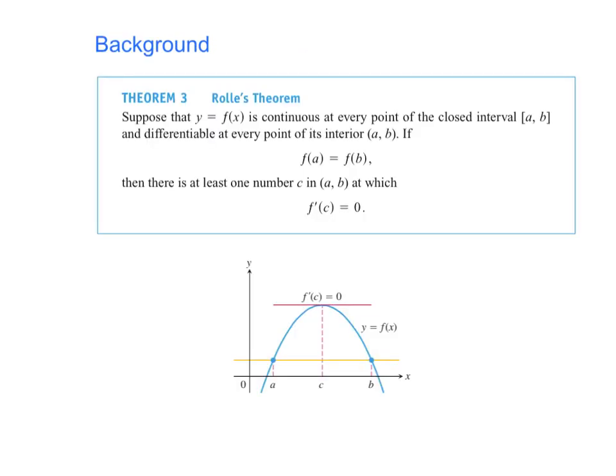In our proof of the Mean Value Theorem we're going to rely on Rolle's Theorem. Just to remind you: if you have a continuous function on a closed interval that's differentiable on the open interval, and f(a) equals f(b), then there's at least one c in (a, b) where f'(c) equals zero.